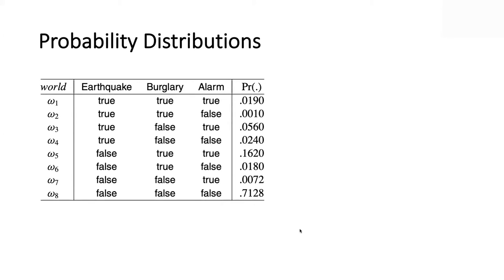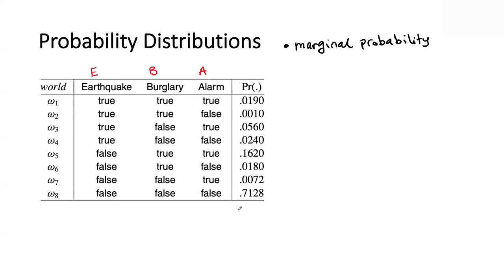A word on probability distributions. Consider an example with three variables: earthquake, burglary, and alarm. With three binary variables, there are eight possible worlds. When I attach numbers between 0 and 1 to these worlds such that they add up to 1, I call this a probability distribution. The main thing you want to do is compute marginal probabilities. For example, the marginal probability for the event A — that the alarm triggered — is computed by looking at the worlds that satisfy that formula and summing their probabilities.